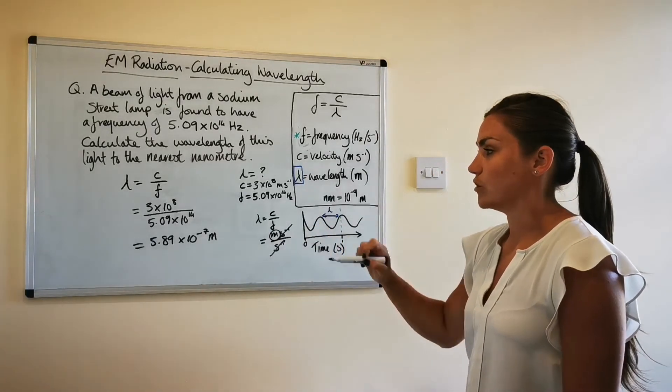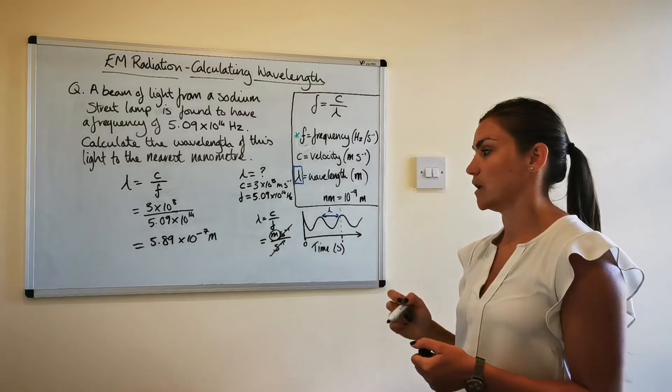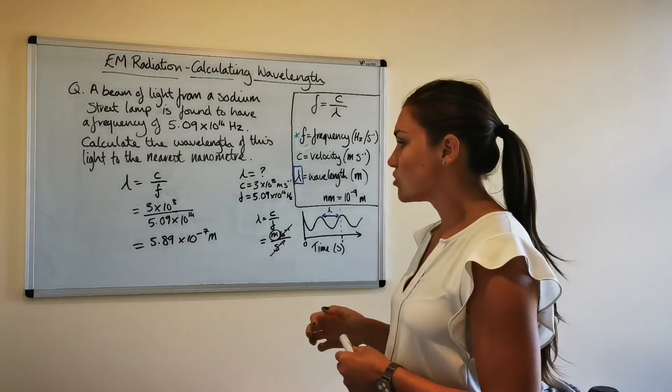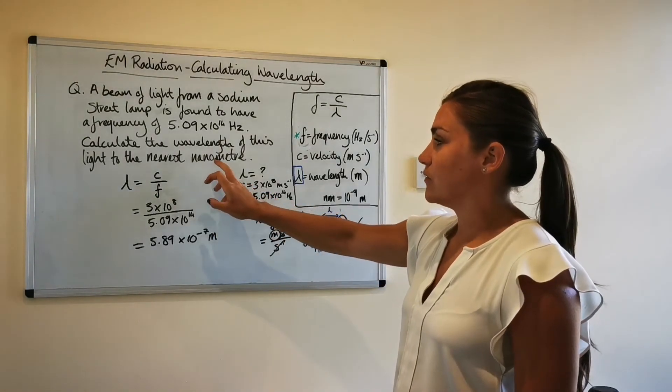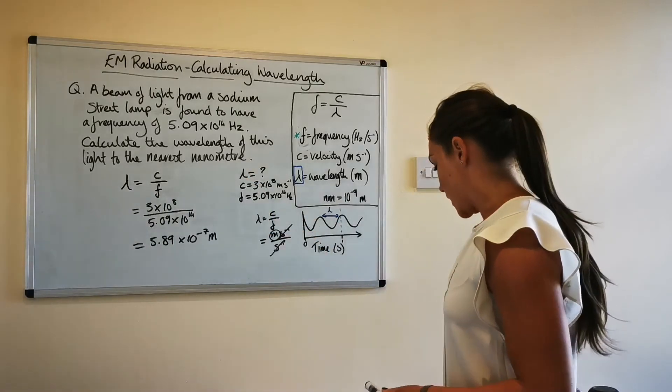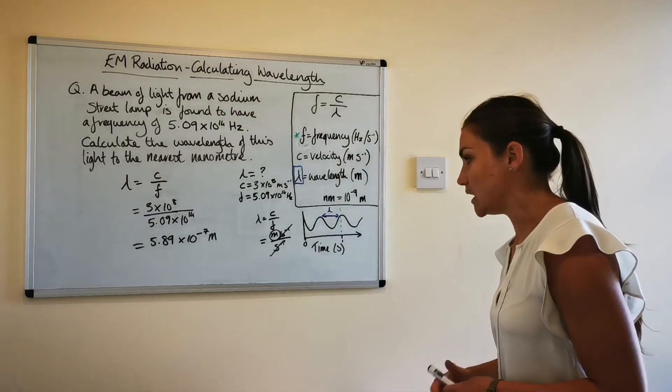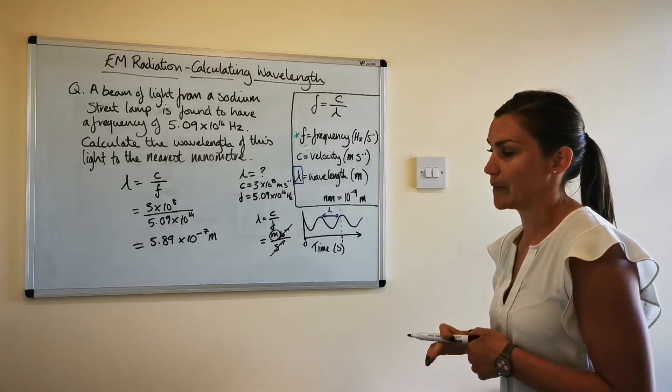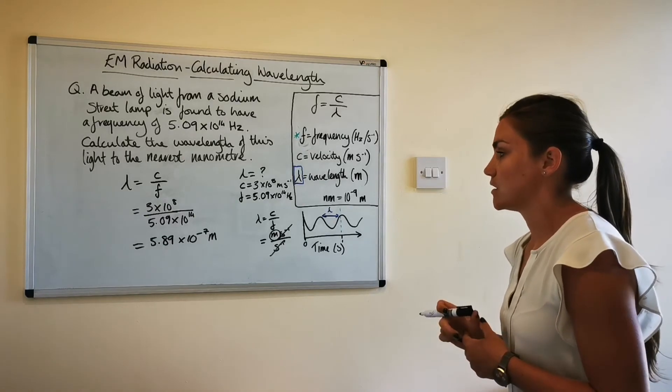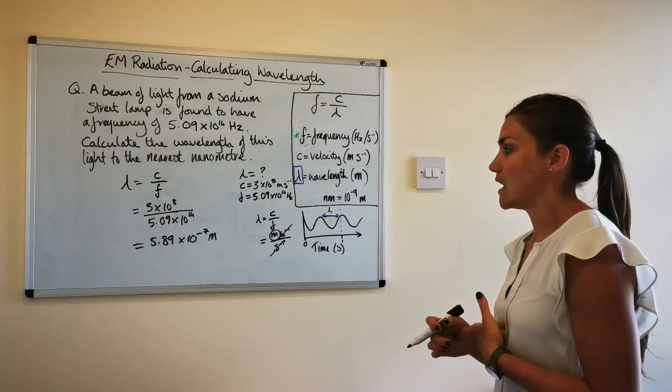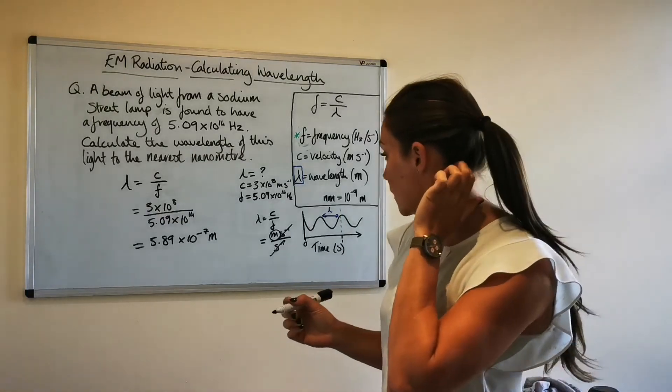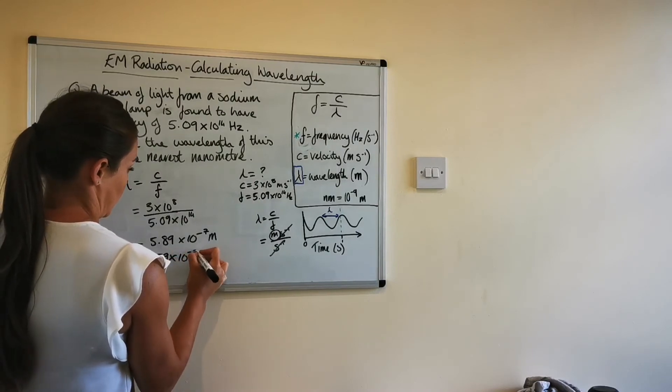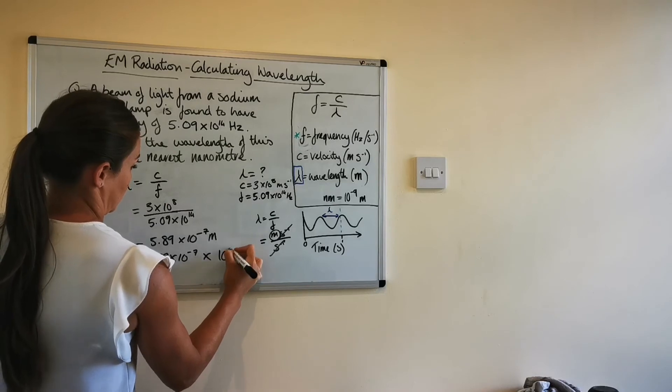So that's how you can work out what your units are for what you're calculating is you can just take the units and plug it in to the equation you've used and cancel anything down. So because the question has asked for this to be converted into nanometers we need to use that conversion number so what we need to do is multiply this by 10 to the power of 9 because one meter is 10 to the power of 9 nanometers. So how we have to do is do five point eight nine times 10 to the power of minus 7 times 10 to the 9.